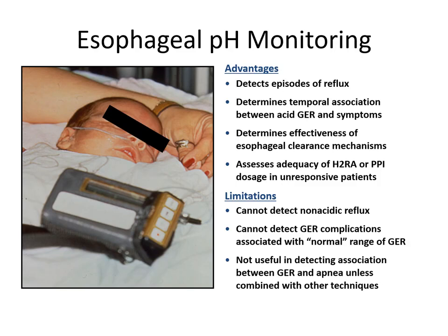Esophageal pH monitoring works on a simple principle. A pH probe is placed in the lower part of the esophagus and monitors the pH at that site for 24 hours. This is a surrogate marker for reflux disease because a drop in pH is related to gastric content reaching the lower esophagus through reflux, allowing you to document reflux episodes as periods of low pH during monitoring.